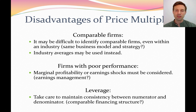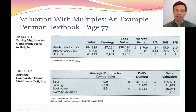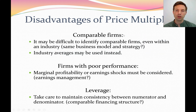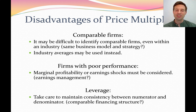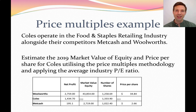So the disadvantages of price multiples are: we can get very different valuations depending on which ratio we use; choosing comparable firms is hard; the ratios change significantly year to year with poor or outstanding performance; and the financing activities of the firm aren't taken into account. There are a lot of disadvantages to price multiples.